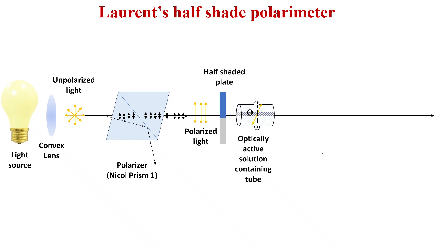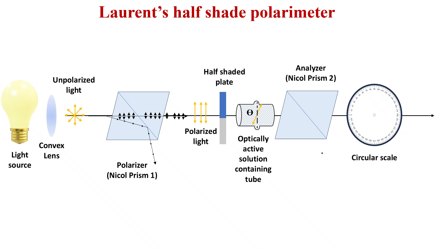Next to the half-shaded plate is a tube containing the optically active solution. When polarized light passes through the optically active substance, its angle of propagation changes by angle theta. Another component is the analyzer, which is Nicol prism number 2. A circular scale is provided to measure the angle theta, and at the end there is an eyepiece to observe the light passing through the entire setup.